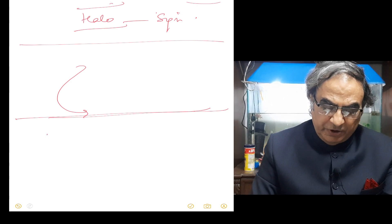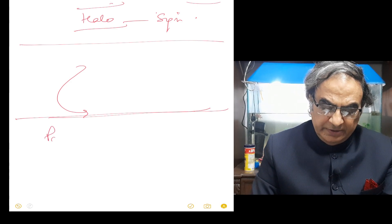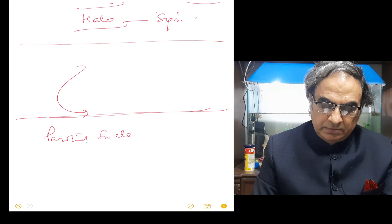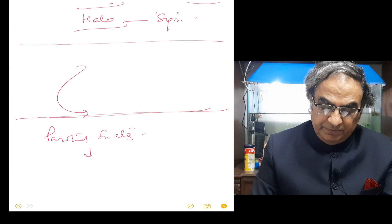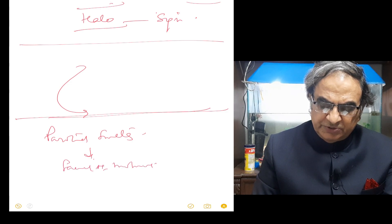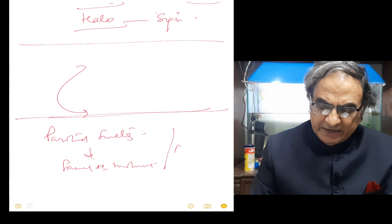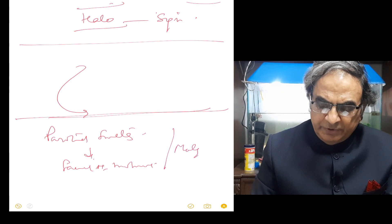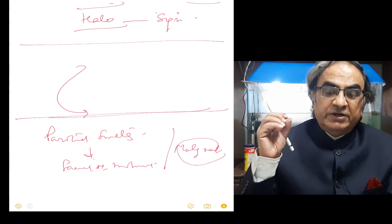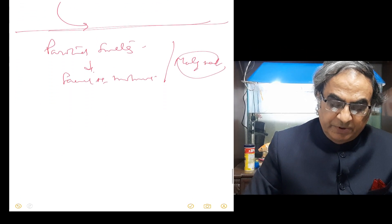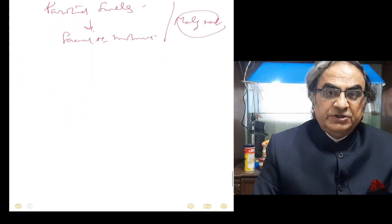Classically, when you've been told there is a parotid swelling and subsequently there are features of facial nerve involvement, we suspect it to be malignant — because the facial nerve lies next to the parotid gland. So if there is infiltration of the facial nerve, the parotid will have these features.